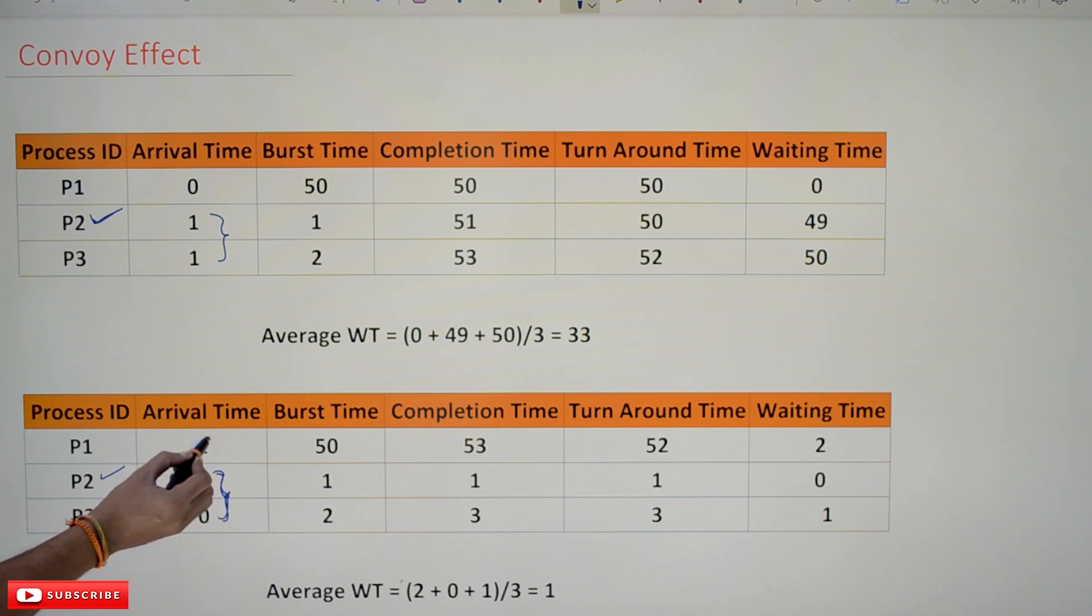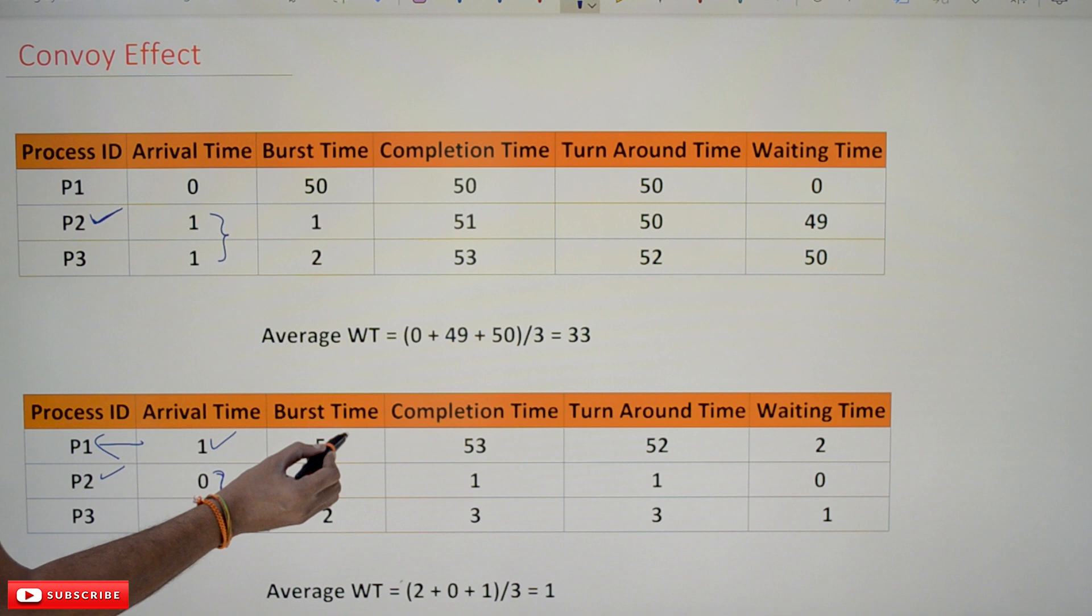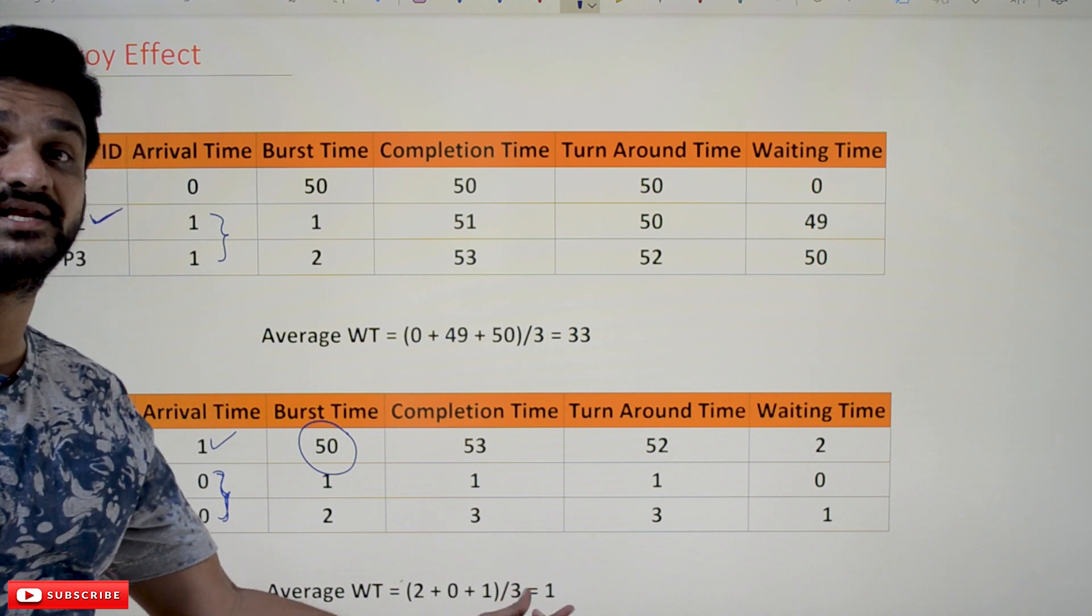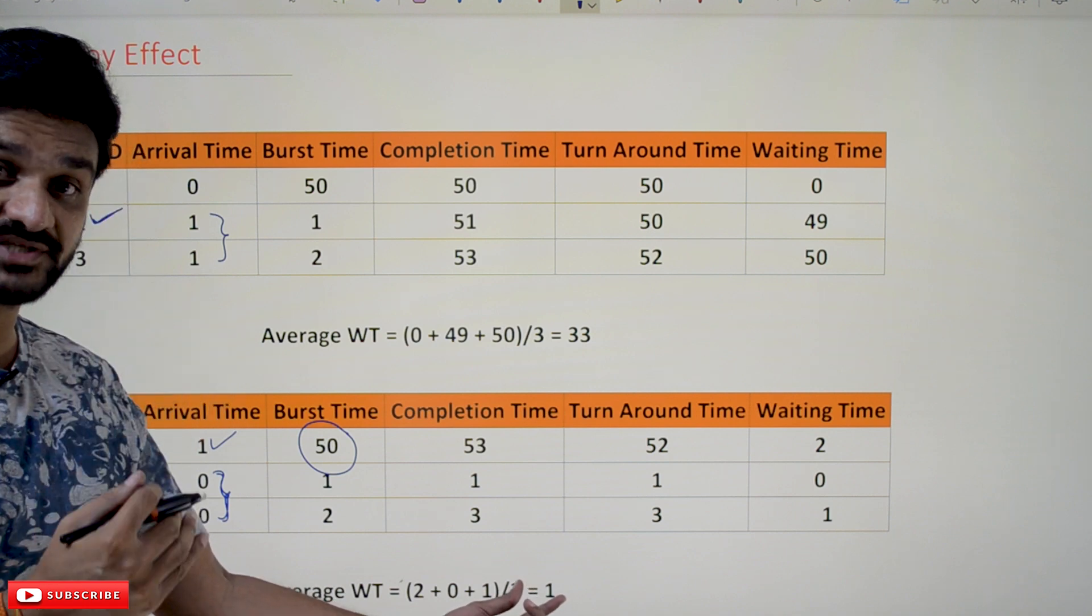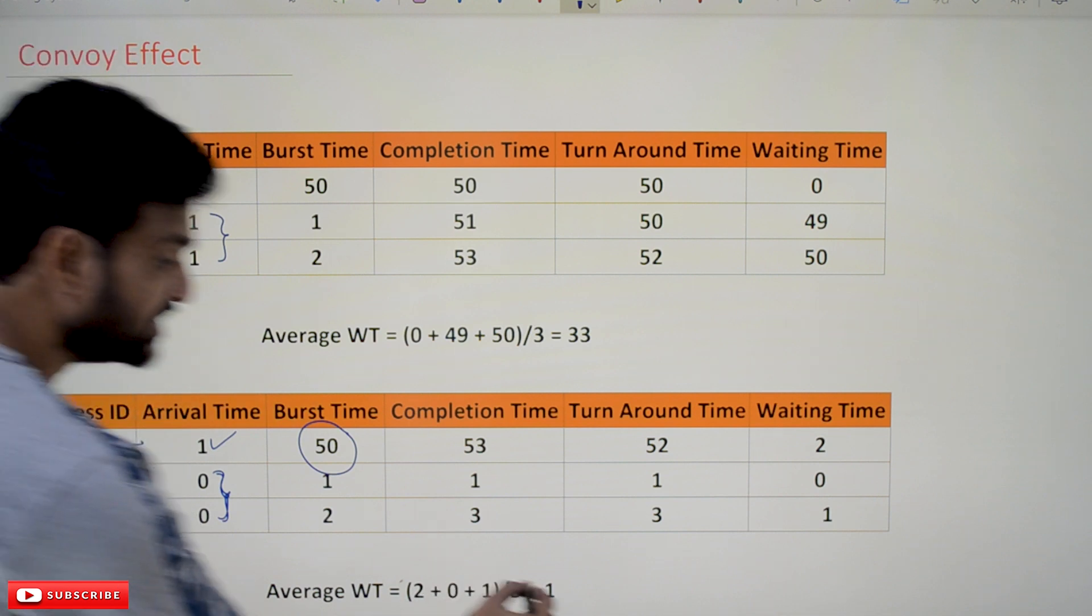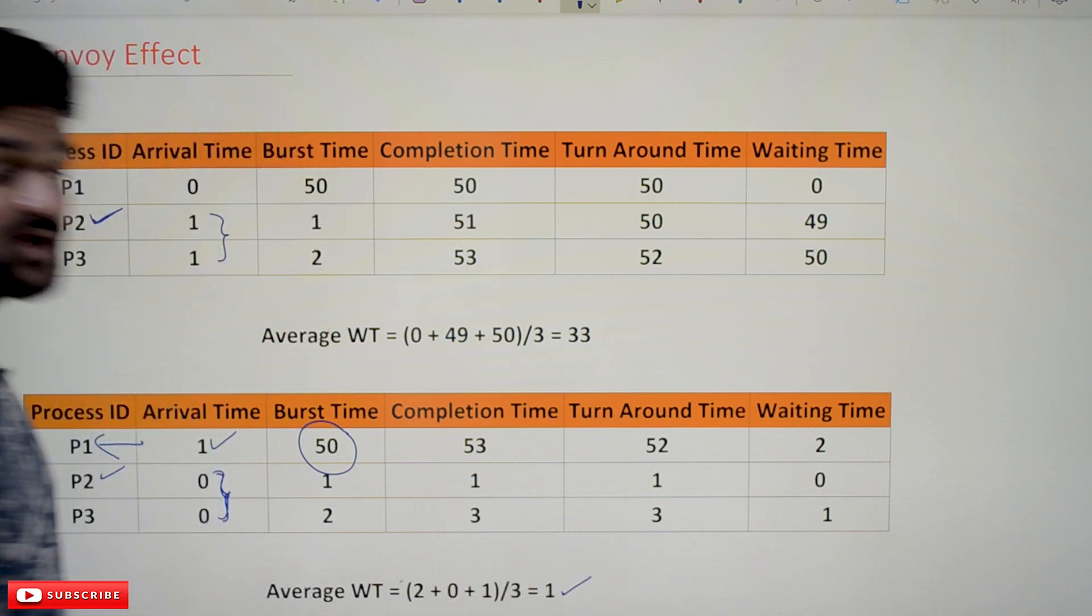If you consider this, after execution of these two processes, this process will get executed—P1 will get executed. So on an average, see how drastically the waiting time of the process has been increased. The average waiting time of the process has been decreased. So here the average waiting time of the process is 1, and here the average waiting time of the process is 33.